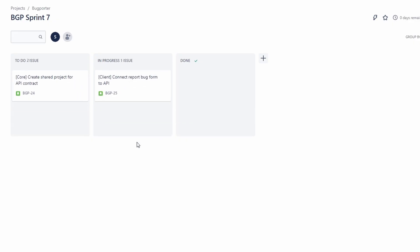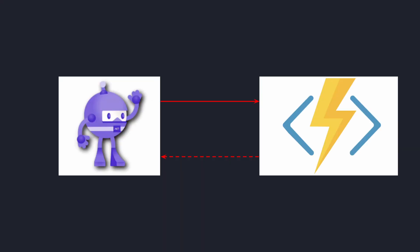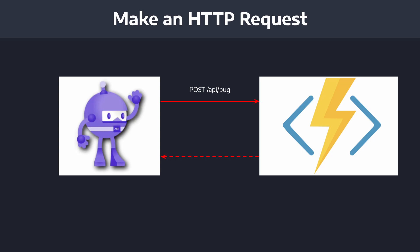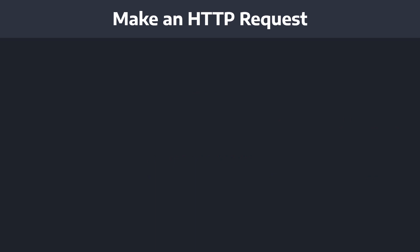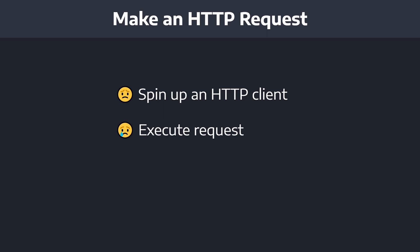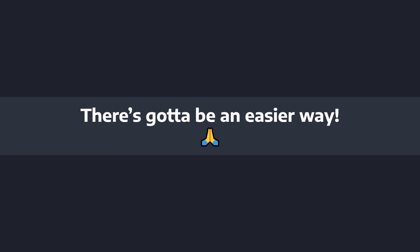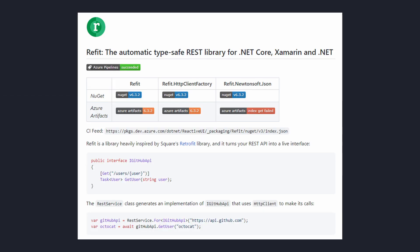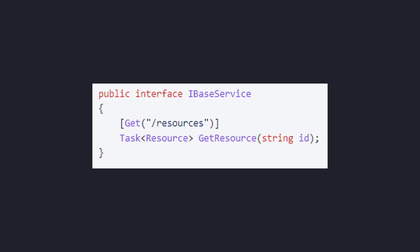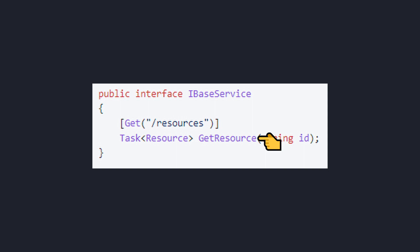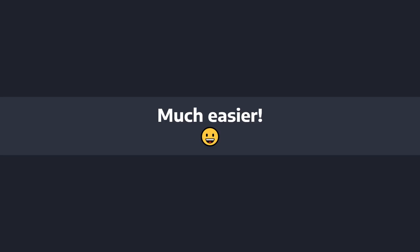We need to connect the report bug form on our .NET MAUI front-end to our Azure Functions backend API. When the user submits the form, we need to make an HTTP POST request to the report bug endpoint. Typically that means spinning up an HTTP client, making the request, and manually deserializing the JSON response — all of which is a pain. Instead, we're going to let the refit package do this for us. Refit is a REST library for .NET — we just tell it the URL, the HTTP method, and the request and response types, and we can make HTTP requests without manually spinning up an HTTP client.